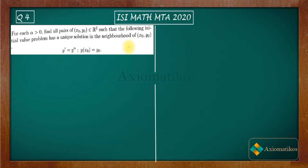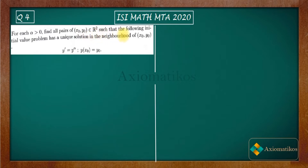Hello dear students, welcome to Exeomaticos. This video is part of the solution series for the PhD entrance exam of mathematics conducted by the Indian Statistical Institute. This is the fourth problem. For each alpha greater than zero, find all pairs (x₀, y₀) belonging to ℝ² such that the following initial value problem has a unique solution in the neighborhood of (x₀, y₀).